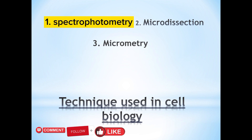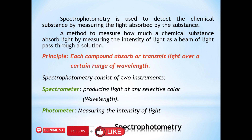Spectrophotometry is derived from three Greek words: spectro means spectrum, meaning a rainbow-like band of colors formed by rays of light passing through a prism; photo means light; and metro means measurement. It is a technique used in cell biology to detect chemical substances.